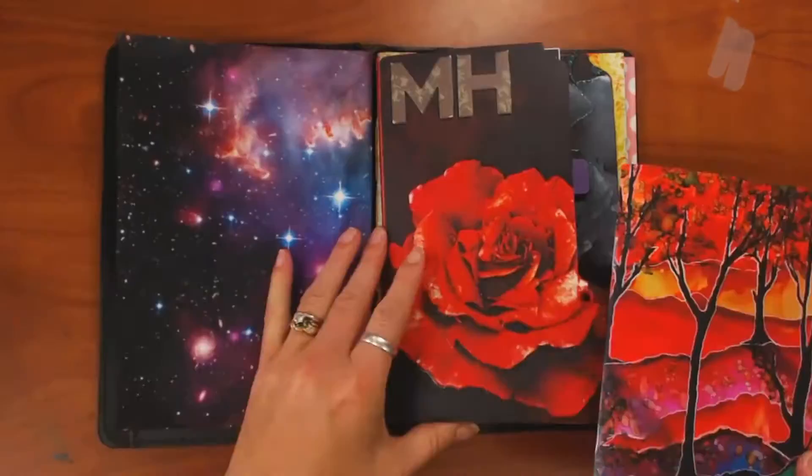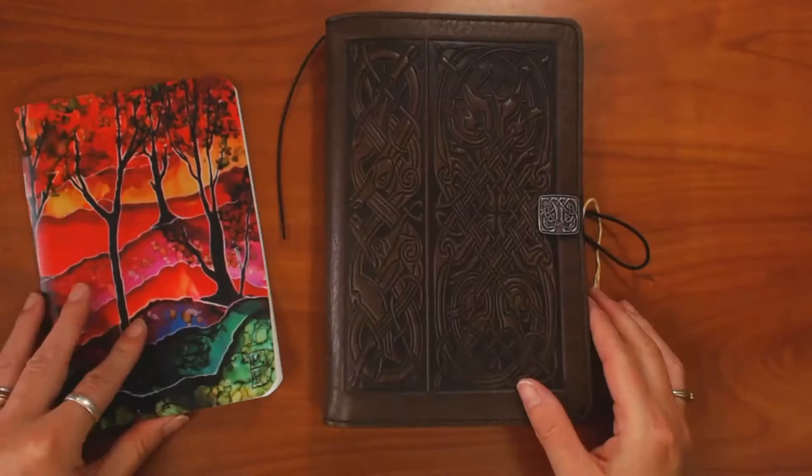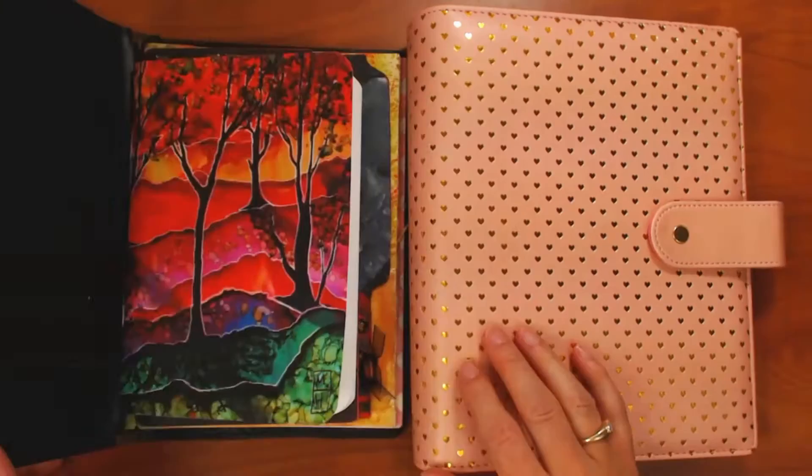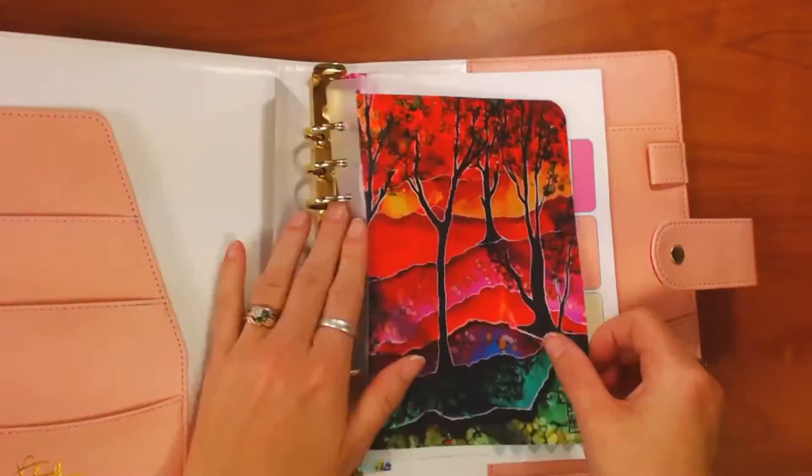And once again, when I'm done with that notebook in my planner, I can simply take it back out and put it back into the fedore where it originally was. And so now I have inserts that I can fit into all of my fedores and all of my planners, both ring-bound and disc-bound.